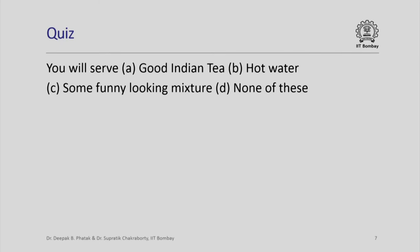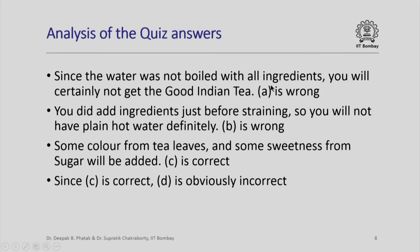Let us analyze this quiz. Since the water was not boiled with all the ingredients, we will certainly not get good Indian tea — therefore A is wrong. Option B says we will get hot water; that is not correct because we did add ingredients just before straining, so some color from the tea leaves and some sweetness from the sugar will diffuse into the water — therefore B is wrong. Because of those reasons, a funny kind of mixture is what will result — C is thus correct. Since C is correct, D is obviously incorrect.